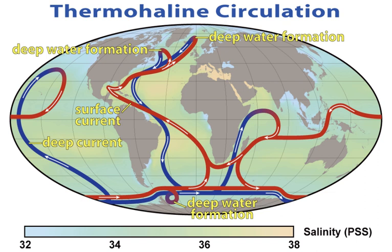The thermohaline circulation is sometimes called the ocean conveyor belt, the great ocean conveyor, or the global conveyor belt. On occasion, it is used to refer to the meridional overturning circulation, often abbreviated as MOC. The term MOC is more accurate and well-defined, as it is difficult to separate the part of the circulation driven by temperature and salinity alone as opposed to other factors such as wind and tidal forces. Moreover, temperature and salinity gradients can also lead to circulation effects that are not included in the MOC itself.